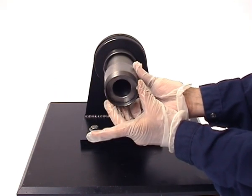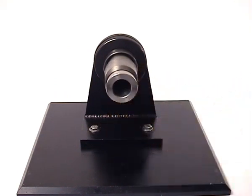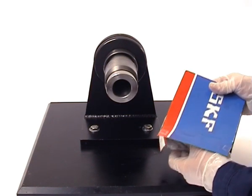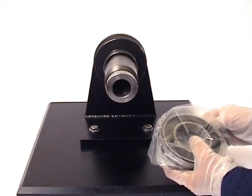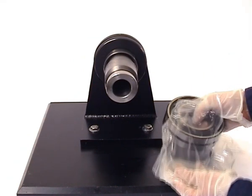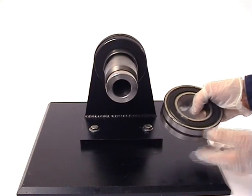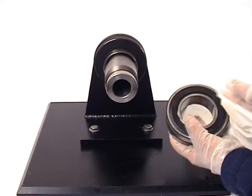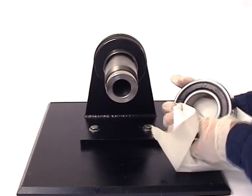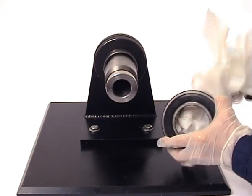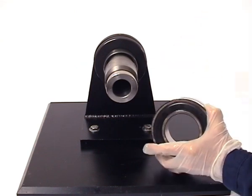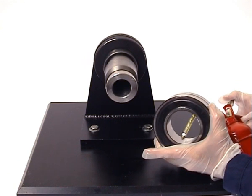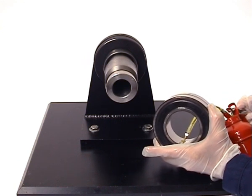Carefully slide the sleeve into position on the shaft. Then with the sleeve in place, unwrap the bearing and wipe the preservative from the bore. Be sure to apply a thin coat of light mineral oil so that the bearing is easier to mount.